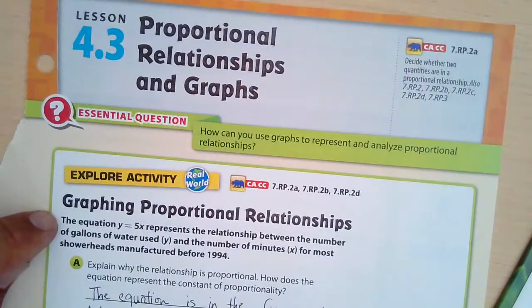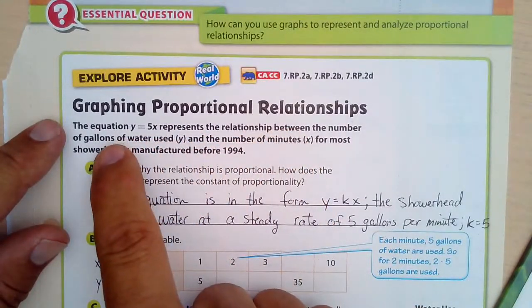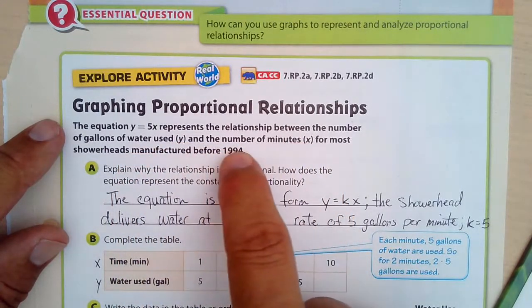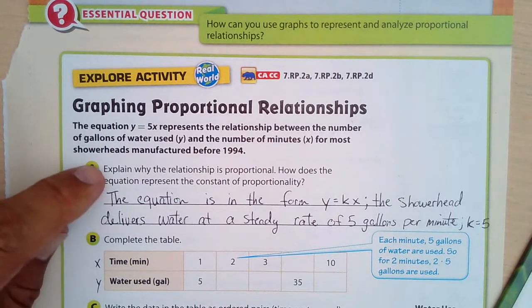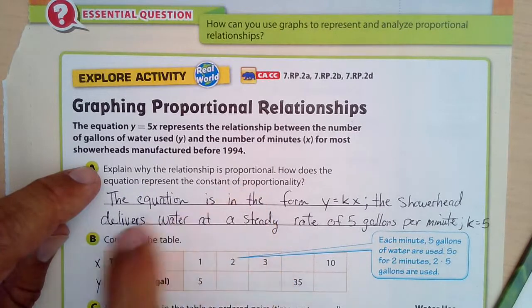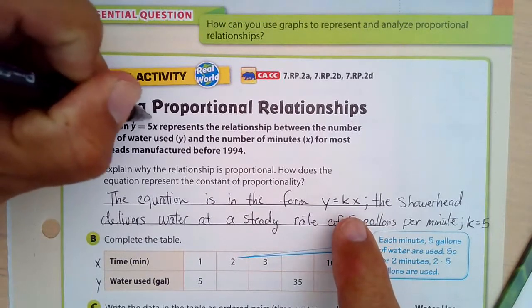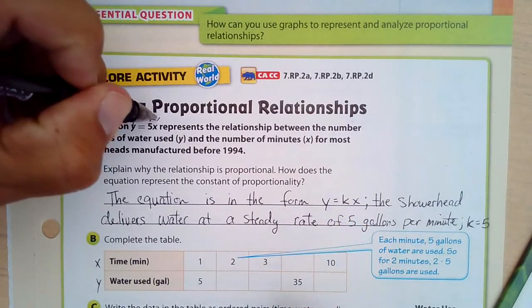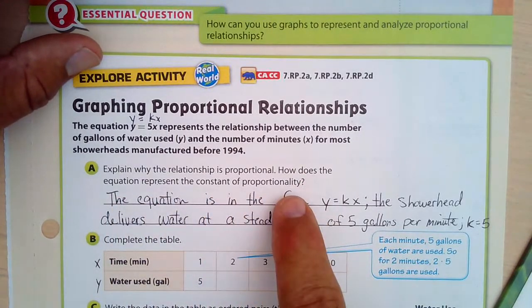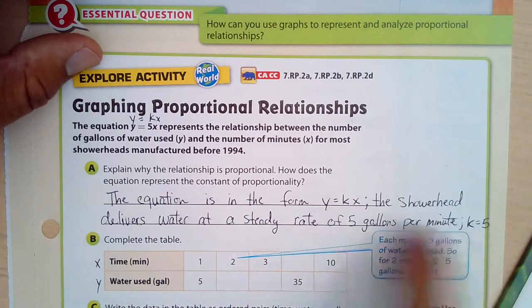So we have this equation, y equals 5x, and it represents the relationship between the number of gallons of water used, which is y, and the number of minutes, x, for most shower heads manufactured before 1994. Explain why the relationship is proportional. Well, the equation is in the form of y equals kx. The shower head delivers water at a steady rate of 5 gallons per minute. k is 5.